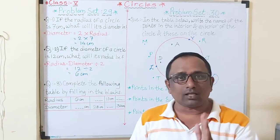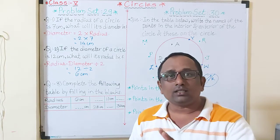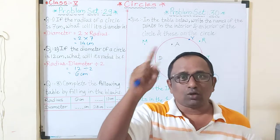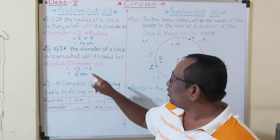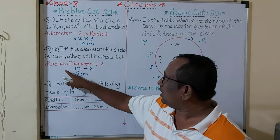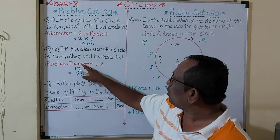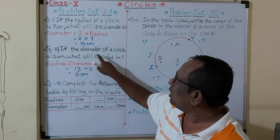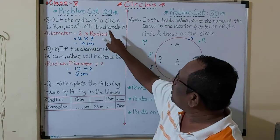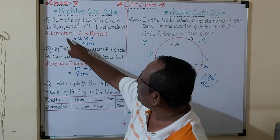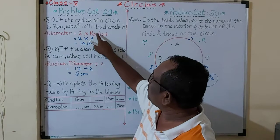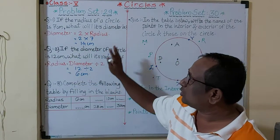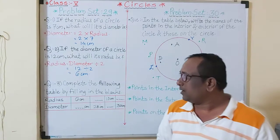Again to revise: diameter of a circle is twice the length of radius, meaning double radius equals diameter. If we have to find the diameter, use 2 × radius. If we have to find the radius, use diameter ÷ 2. Keep these two formulas in your head.